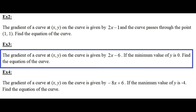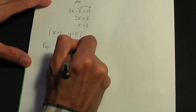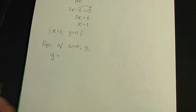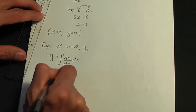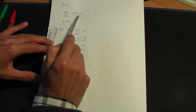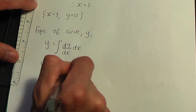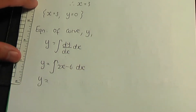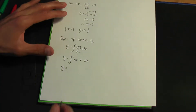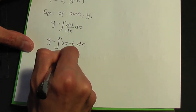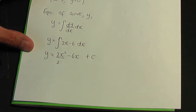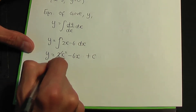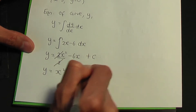To find the equation of the curve, we integrate dy over dx with respect to x. dy over dx is 2x minus 6. Integrating 2x gives 2x squared divided by 2. Integrating minus 6 gives minus 6x, plus constant c. Cancelling the 2s gives y equals x squared minus 6x plus c.